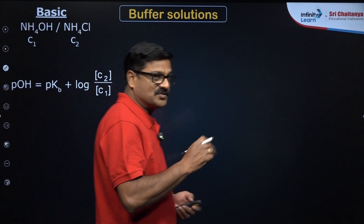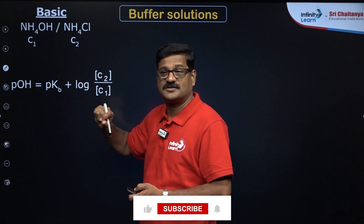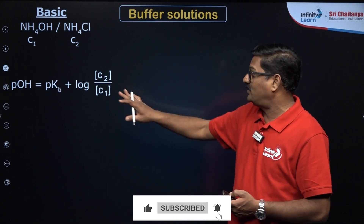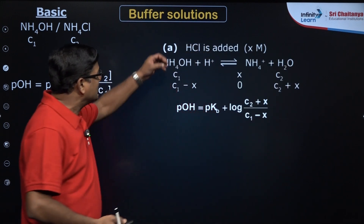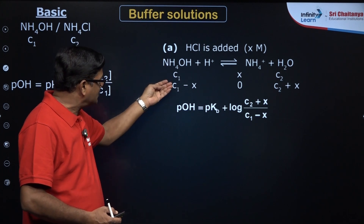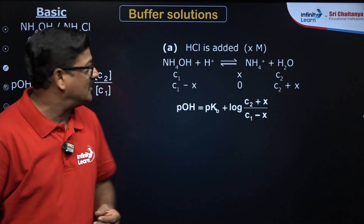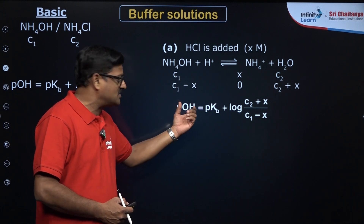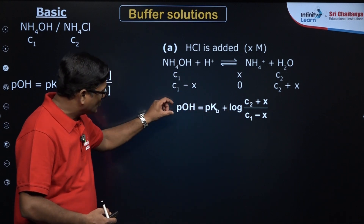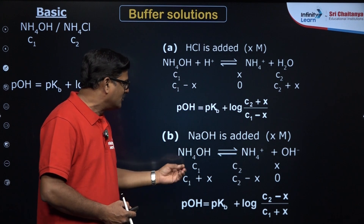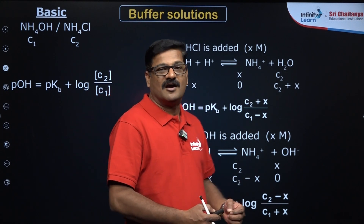For the basic buffer — ammonium hydroxide and ammonium chloride — let C1 be the ammonium hydroxide concentration and C2 be the ammonium chloride concentration. pOH = pKb + log(C2/C1). If a little bit of HCl is added, ammonium hydroxide is consumed: X amount of ammonium hydroxide is consumed because X molar HCl is added. So pOH = pKb + log((C2 + X)/(C1 − X)). Similarly, if a little bit of sodium hydroxide is added, pOH = pKb + log((C2 − X)/(C1 + X)).